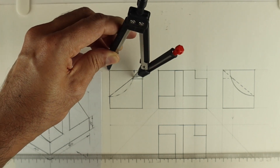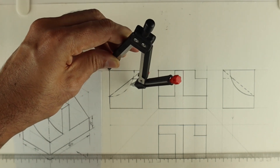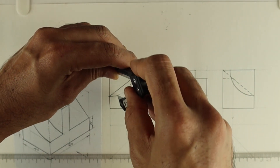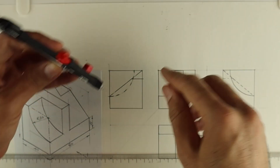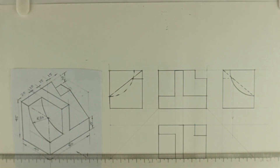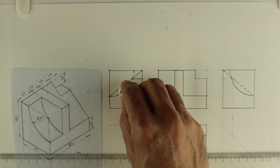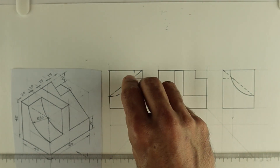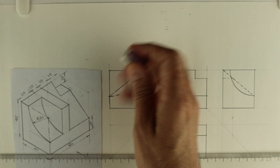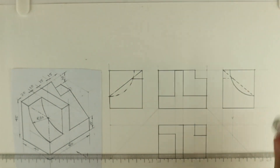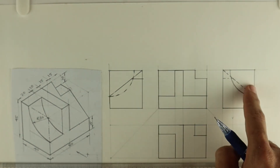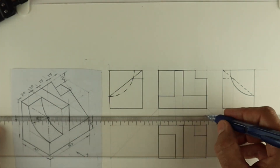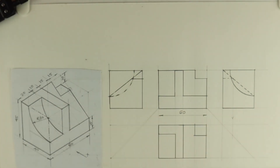You can leave gaps this way. We are done with the side view as well. In this case we have done the front view, top view, left-hand side view, and right-hand side view. Now we can do dimensioning and labeling.